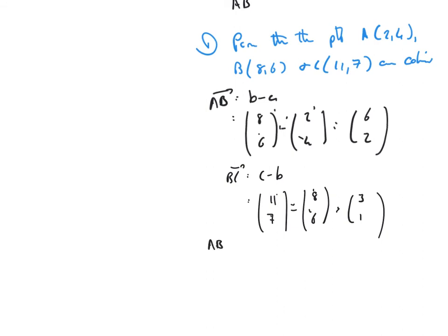Now, what we can clearly see then is AB is equal to 2 lots of the vector BC. Right, so that's the relationship of multiplication by scalar.